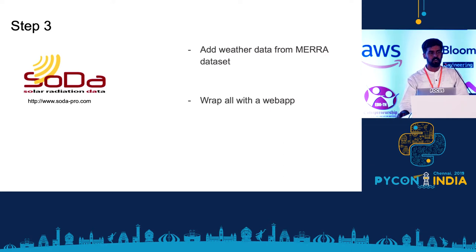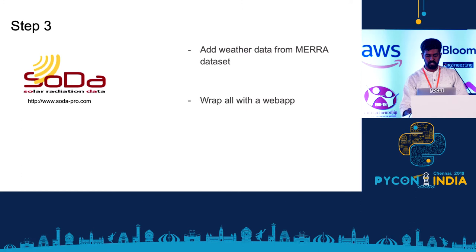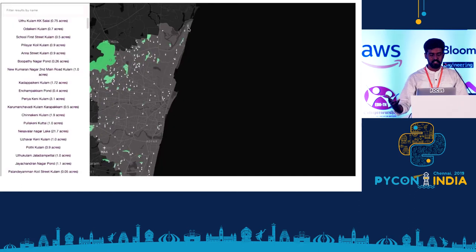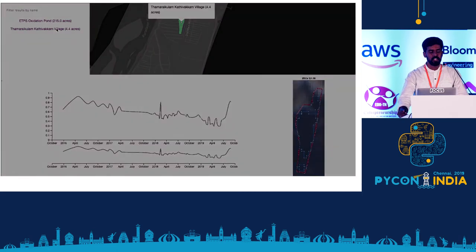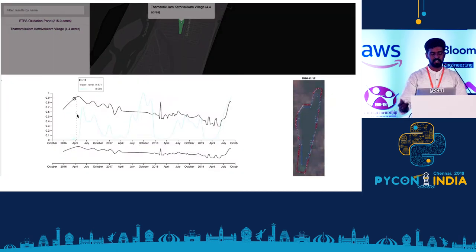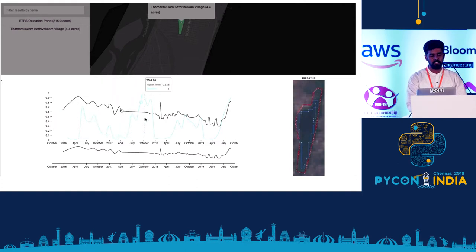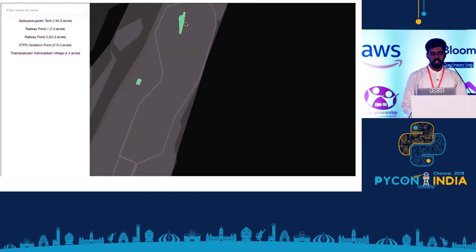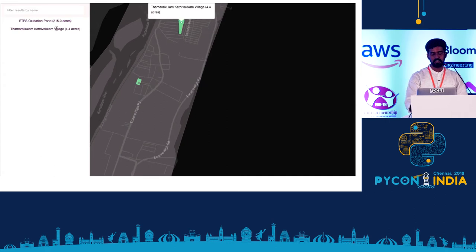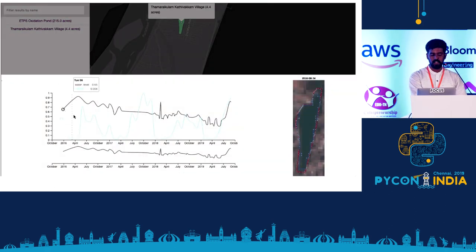I played around and wanted to add weather data to see how it correlates with water available in a single place, then wrapped it in a web app. This is the final POC I made, where you can select any of the 290 water spots. It's a D3 graph where the black line is the water level and the blue is the rainfall in that particular region over time, and on the right you see the satellite image for that time period.